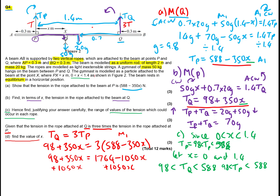Continuing: we get 1400x equals 1764. Solving gives x equals 1.19 meters. In context, this makes sense because it's within the range 0 to 1.4. That gets the answer mark and another method mark — 12 out of 12. Do bring the video back to the start and give it a go yourself.